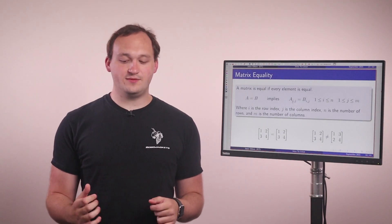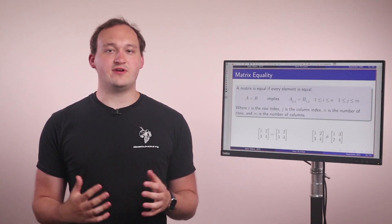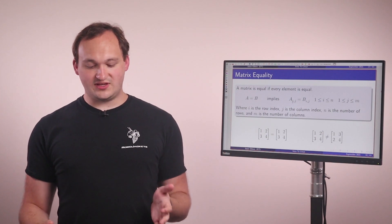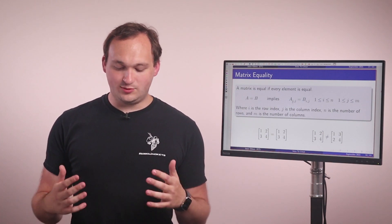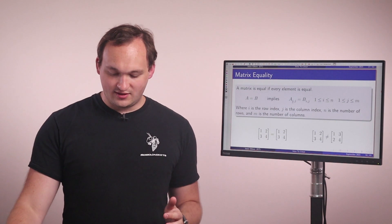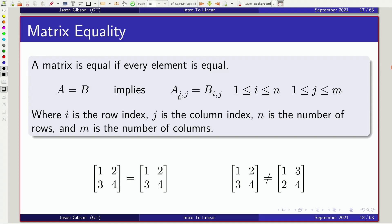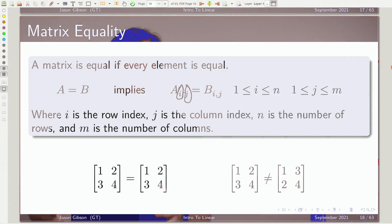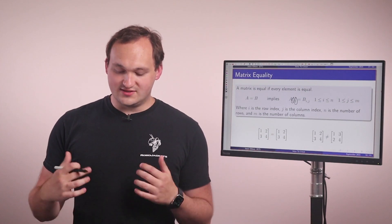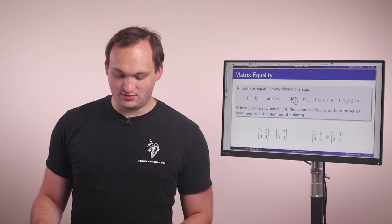The next thing we'll do is talk about matrix equality. So two matrices are equal if every element is equal. And what we can see here is I'm saying A is equal to B, and that implies that every element is equal. So how I'm doing this is I'm indexing into a row, which is denoted by i, or a column, which is denoted by j. So if every row and every column, every value is the same, the two matrices are equivalent.